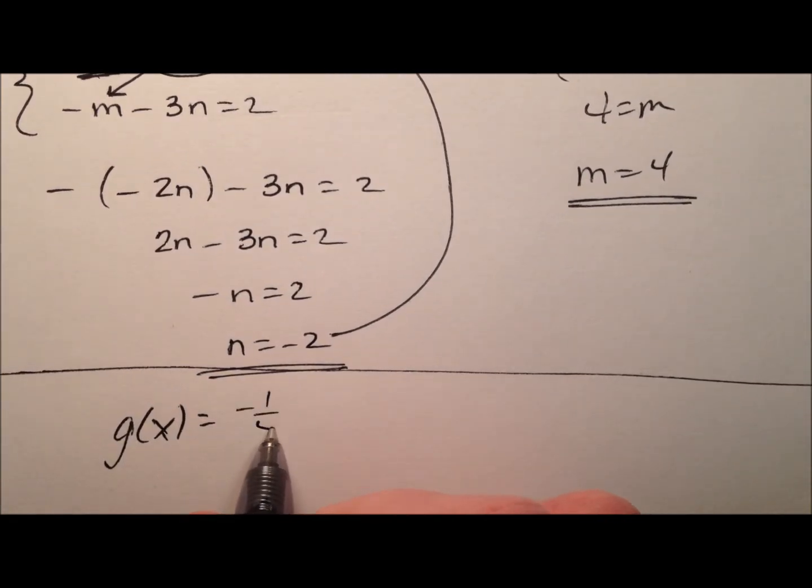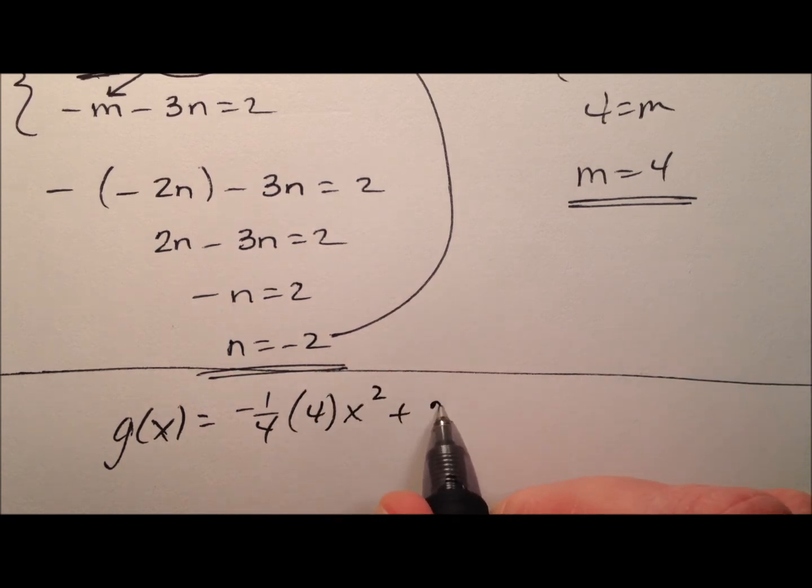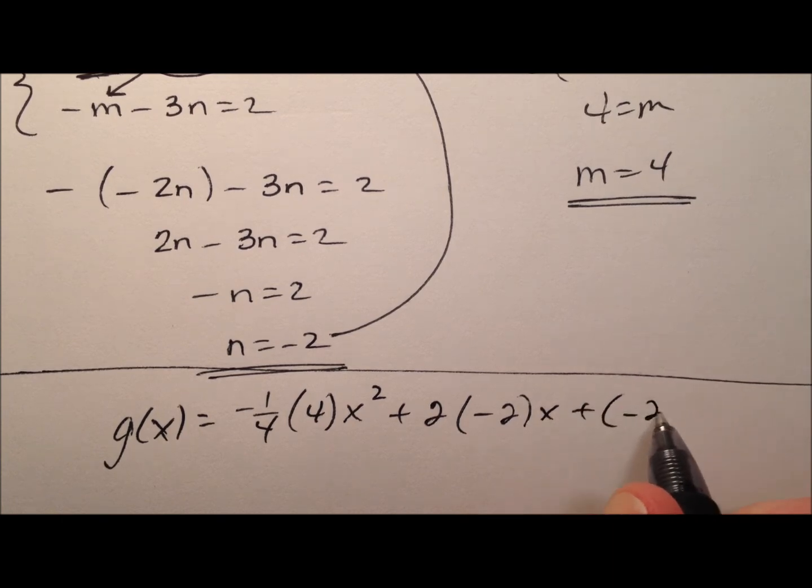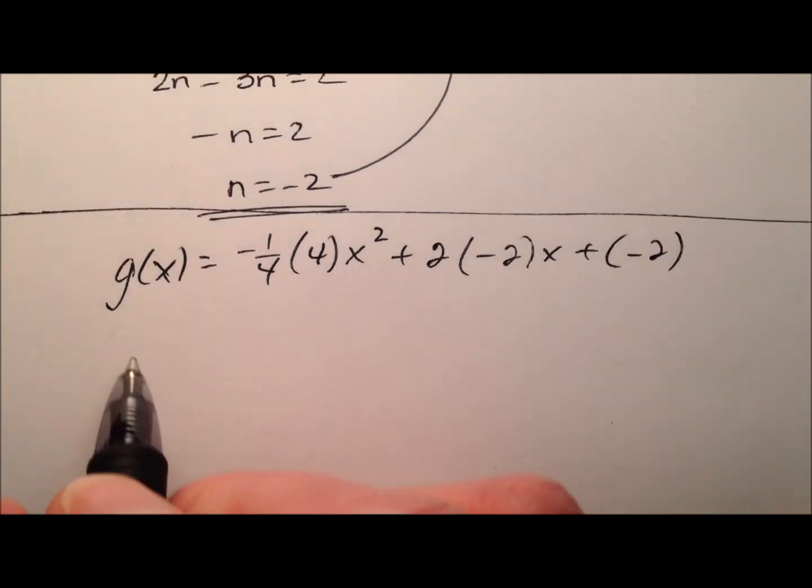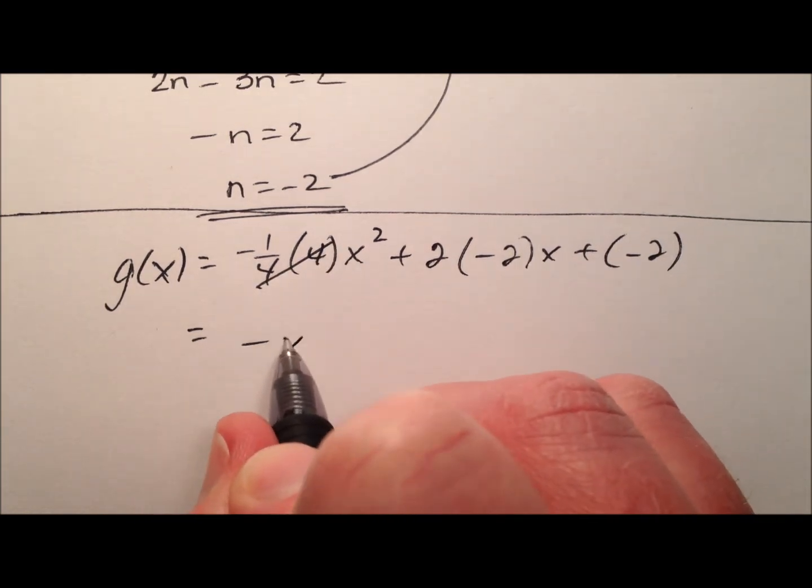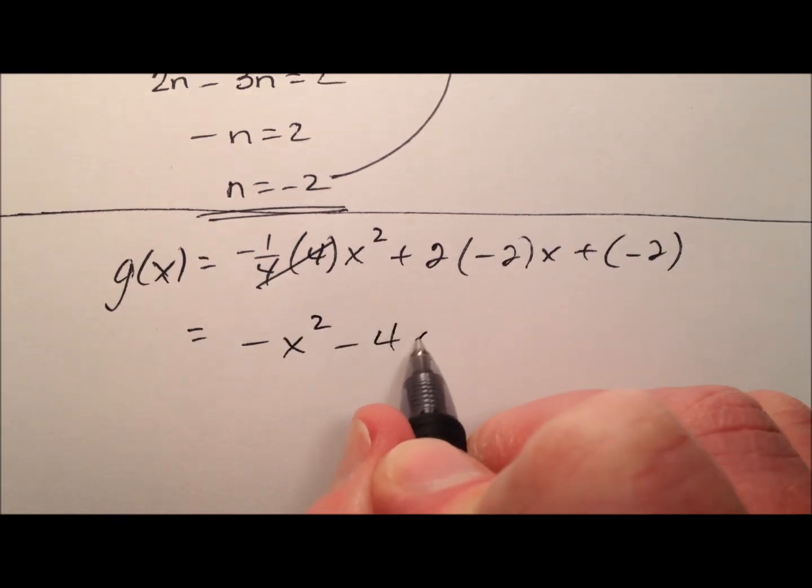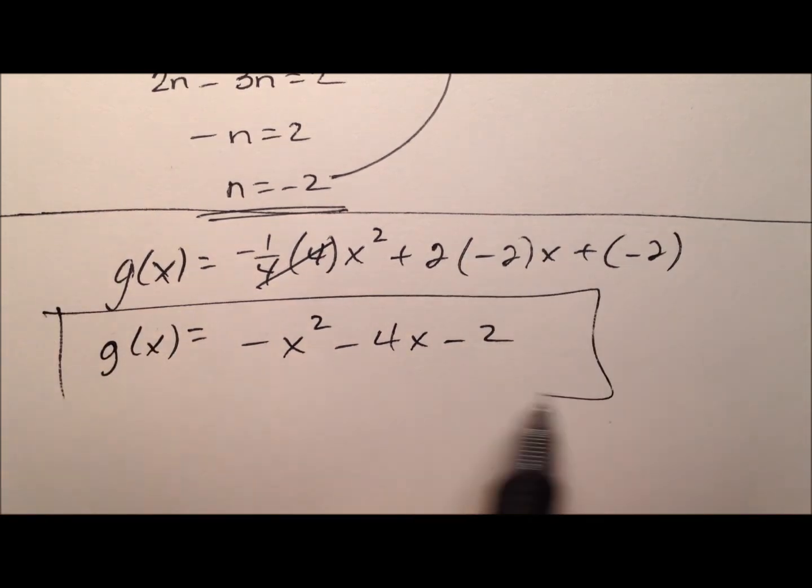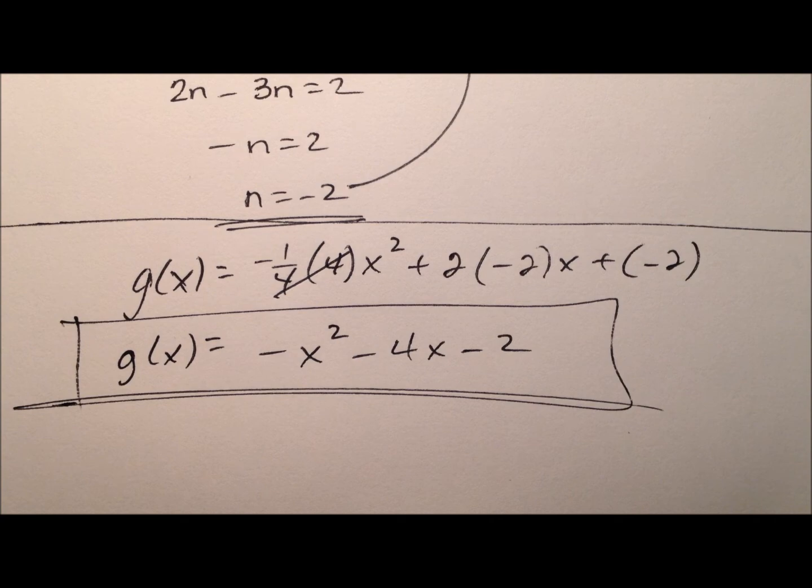So, it's negative 1 fourth times m x squared plus 2 times n x plus n which is negative 2. All right. So, the 4s will cancel. It looks like I'll end up with a negative x squared minus 4x minus 2. And that will be my function g of x.